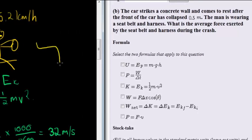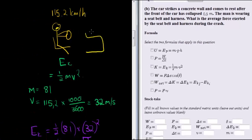So the front of the car is able to collapse, in other words, just being scrunched up for 0.5 meters. The man is wearing a seatbelt and a harness. What is the average force exerted by the seatbelt and the harness during the crash?